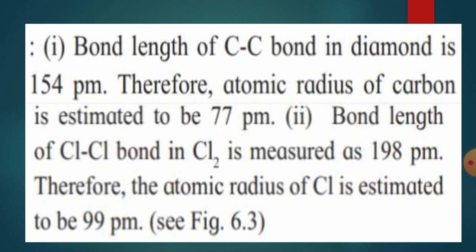Similarly, the bond length of Cl–Cl in Cl₂ is measured as 198 pm. Divide 198 pm by 2, and you get the atomic radius of chlorine, which is 99 pm.